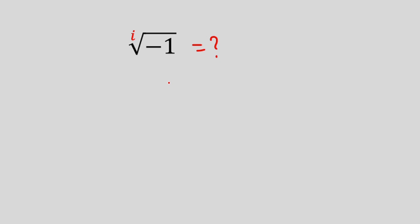First of all, let's enter into the complex world. On the Cartesian plane, on the x-axis we have the real values — let's represent it by r. Then on the y-axis we have the imaginary numbers — let's represent it by i.